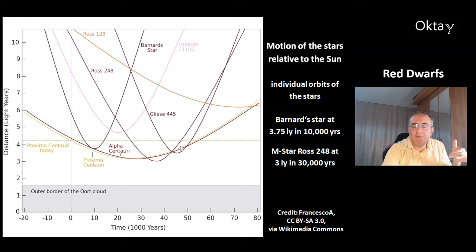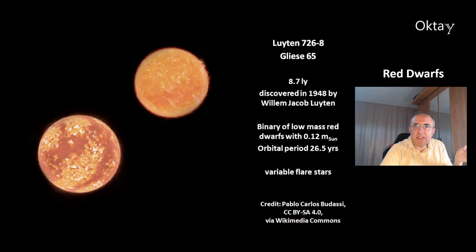This is an example of a binary red dwarf system: Luyten 726-8, also called Gliese 65, at a distance of 8.7 light years. It was discovered in 1948 by Wilhelm Jakob Luyten. It's a binary of low-mass red dwarfs, each with 12% of the sun's mass, with an orbital period of 26.5 years. Both stars are known to be variable flare stars.